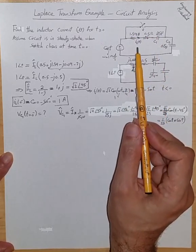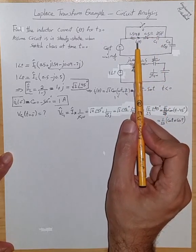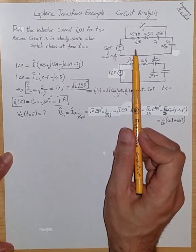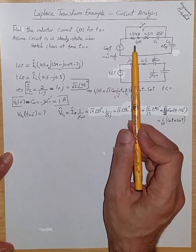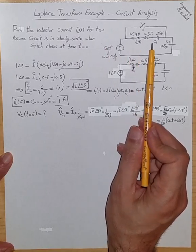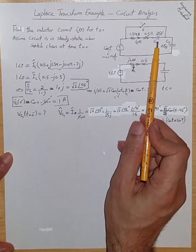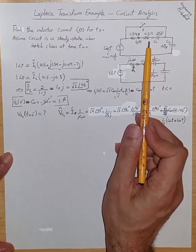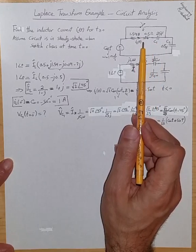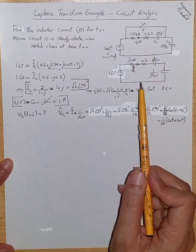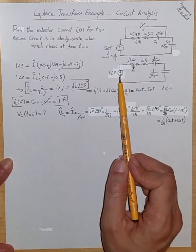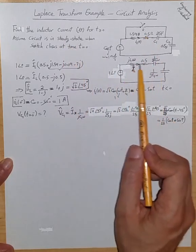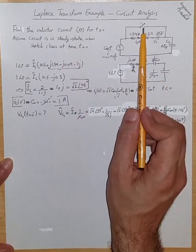In order to start using the Laplace transform for this example, I first need to find the current of the inductor and the voltage of capacitor C1 right before the closure of the switch. Those are the initial conditions I need so that I can proceed with the S-domain analysis. We need to do a sinusoidal steady state analysis right before the closure of the switch when the circuit is still open.